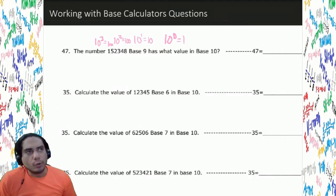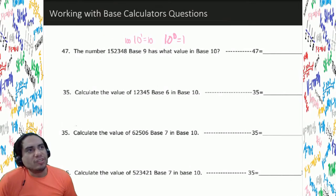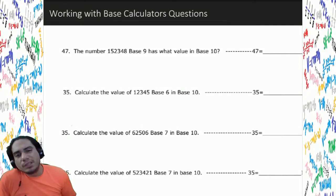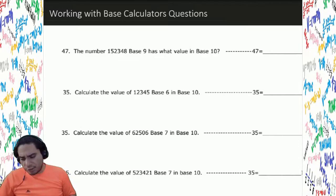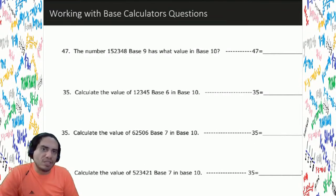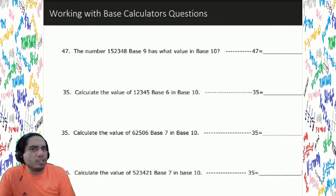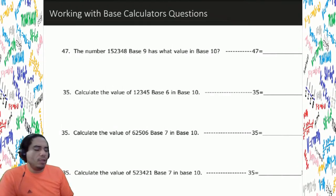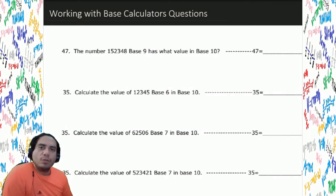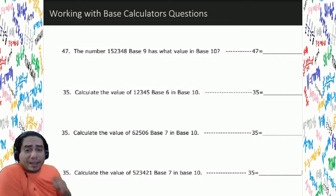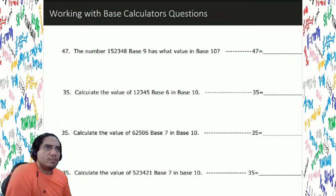This arbitrary number system — base 10 — exists pretty much because we have 10 digits. Other systems exist because of certain applications. For example, base 2, also known as binary, exists because in electronics there are only two real options: the switch is on or the switch is off. Today we're going to be looking at converting bases into base 10.